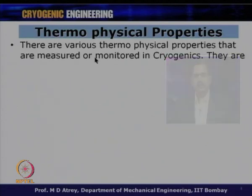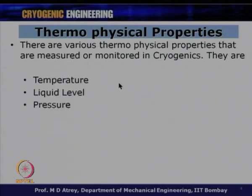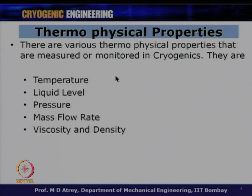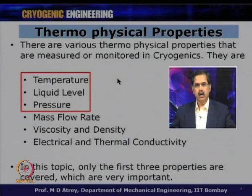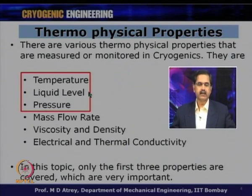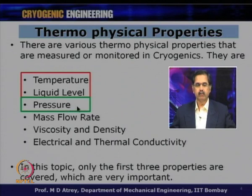Various thermophysical properties measured in cryogenics include temperature, liquid level, pressure, mass flow rate, viscosity, density, and electric and thermal conductivity. We said we would cover temperature, liquid level, and pressure in detail, as these three are normally used in all cryogenic experiments. We have already dealt with temperature and liquid level, and in this lecture we will discuss pressure.